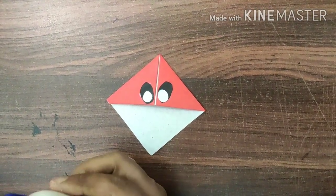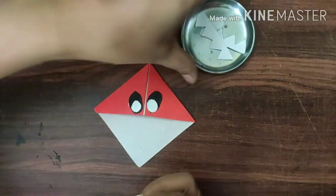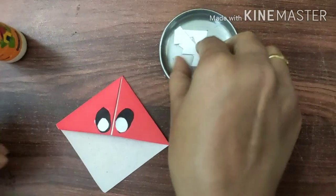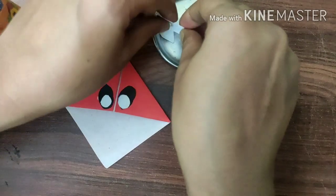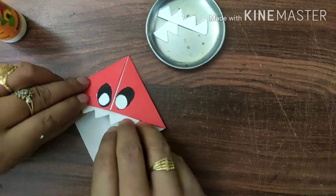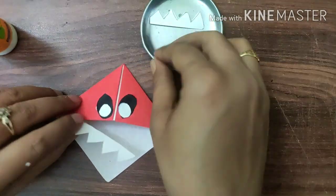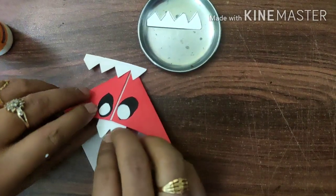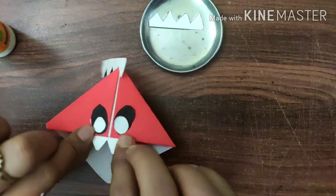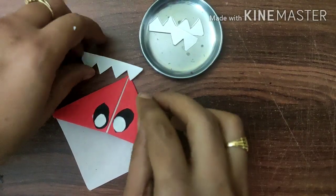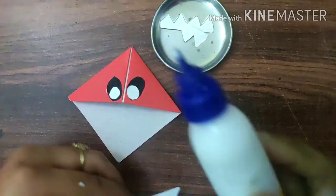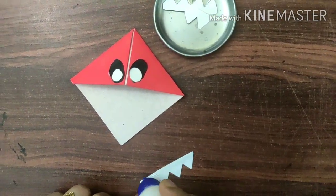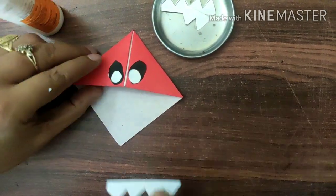Now you can use the cutouts for making teeth. If you want to make long teeth, paste it like this. If you want to make shorter ones, you can use these cutouts. I am going with this part. Apply glue on it and paste it on the upper side.